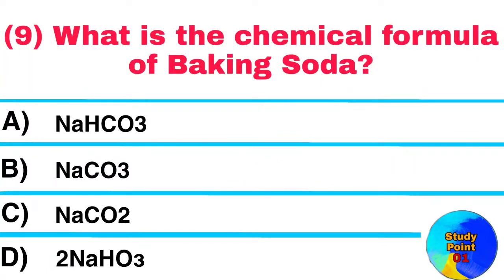Question No. 9. What is the chemical formula of baking soda? Answer: NaHCO3.